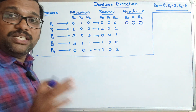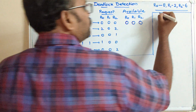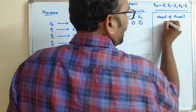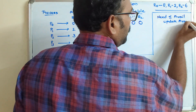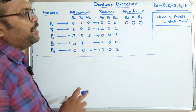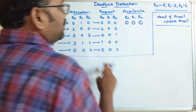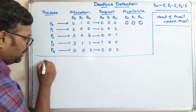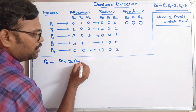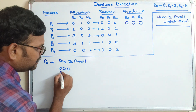We are still checking whether this situation is safe or unsafe. In the banker's algorithm we check: need ≤ available, then update available. The same logic applies here, but instead of 'need' we use the term 'request'. So we need to find whether request ≤ available. Consider P0: its request is 0,0,0 and availability is 0,0,0 — all comparisons are true.